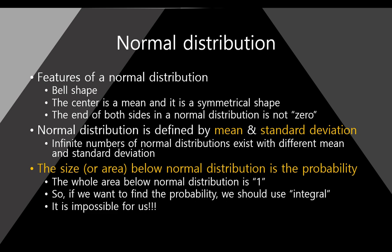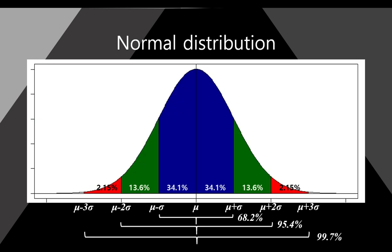There are so many normal distributions in the world. But here, the major point you must understand is that the size or area below the normal distribution is the probability. What does it mean? We have a blue, green, and red area. However, there are very, very small areas on the ends as well. The area below the line of the normal distribution — the areas are probability. As you know, probability is ranged from 0 to 1. So the sum of all area below this line is 1.